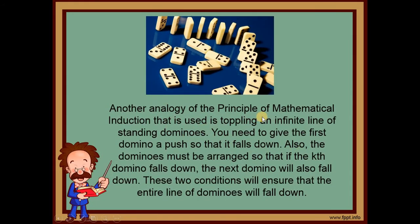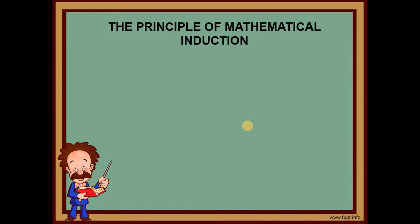Another analogy of the principle of mathematical induction is toppling an infinite line of standing dominoes. You need to give the first domino a push so that it falls down. Also, the dominoes must be arranged so that if the k-th domino falls down, the next domino will also fall down. These two conditions will ensure that the entire line of dominoes will fall down continuously.